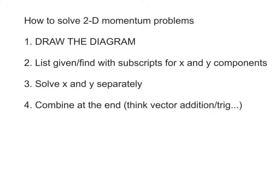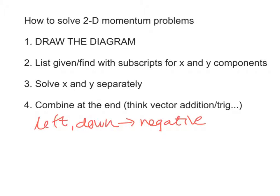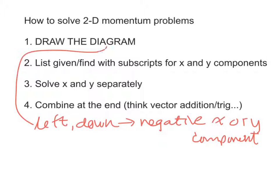One thing to watch out for: if something is moving to the left or down, that means that the component is negative — so a negative x or y component. This all comes from the diagram, so you need a diagram.